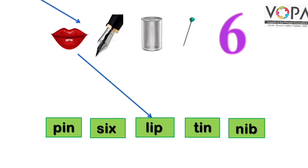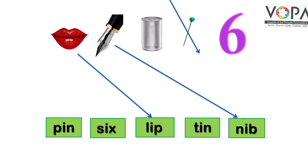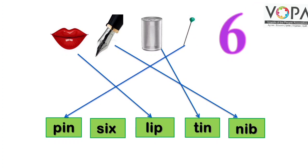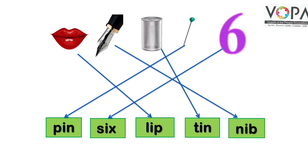Next: Nib — N I B — Nib. Next: Tin — T I N — Tin. Next: Pin — P I N — Pin. Aur aakhir mein hai: Six. Is tarah bacchon aapko apni darsi kitaab par yeh activity karni hai.